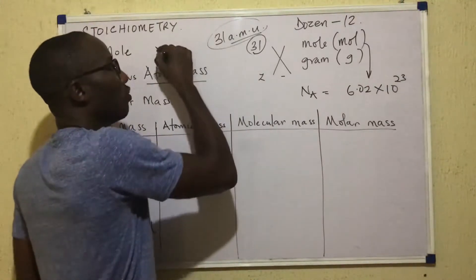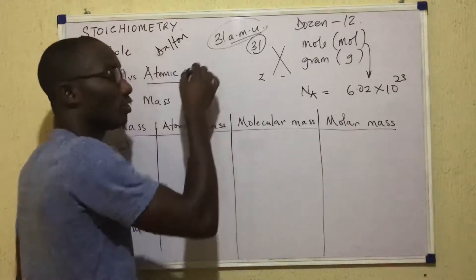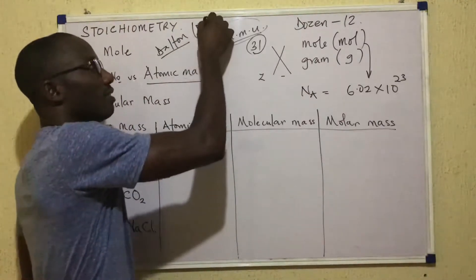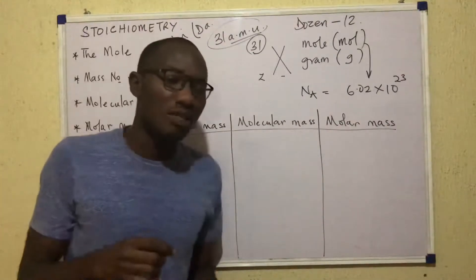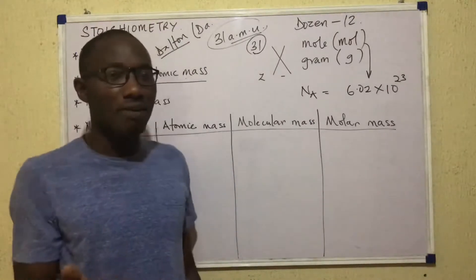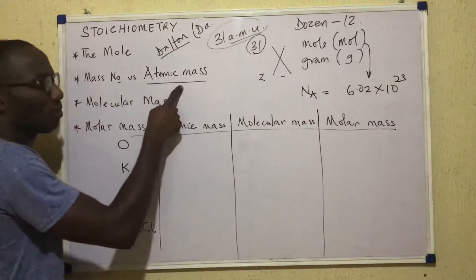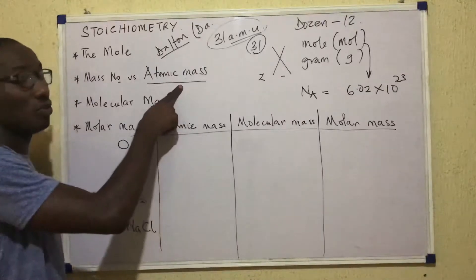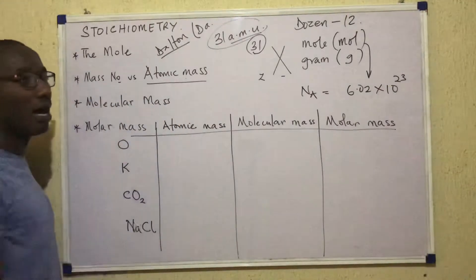The dalton is the AMU and that's the unit of atomic mass. But mass number is just a number — it doesn't have units. That's the difference between mass number and atomic mass. They have the same numerical values, but one has a unit because it's a mass, while the other does not.